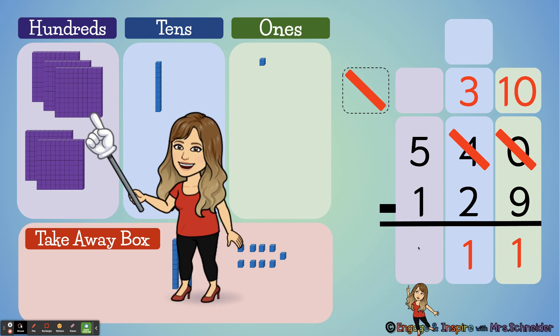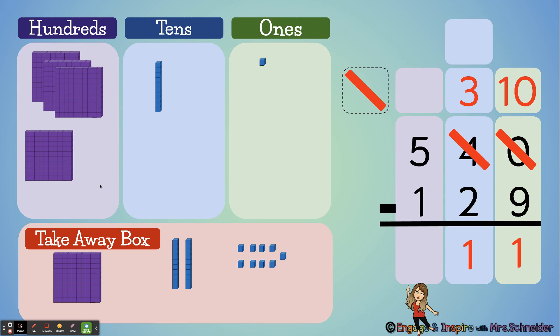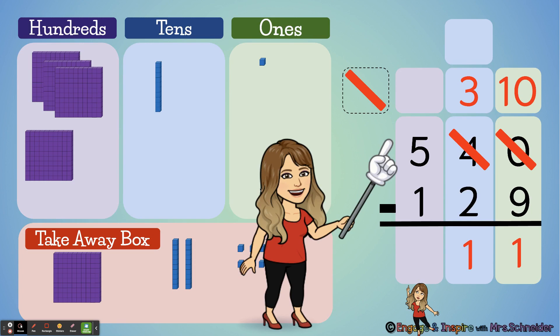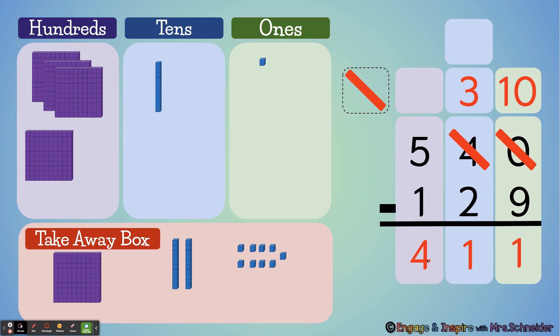Last, we're going to move to our hundreds place. I have five hundreds and I need to give one away. Okay, so how many hundreds do I have left? All right, I have four left because five minus one equals four. So the answer to this problem is four hundred eleven. Mrs. Schneider has four hundred eleven cookies left.